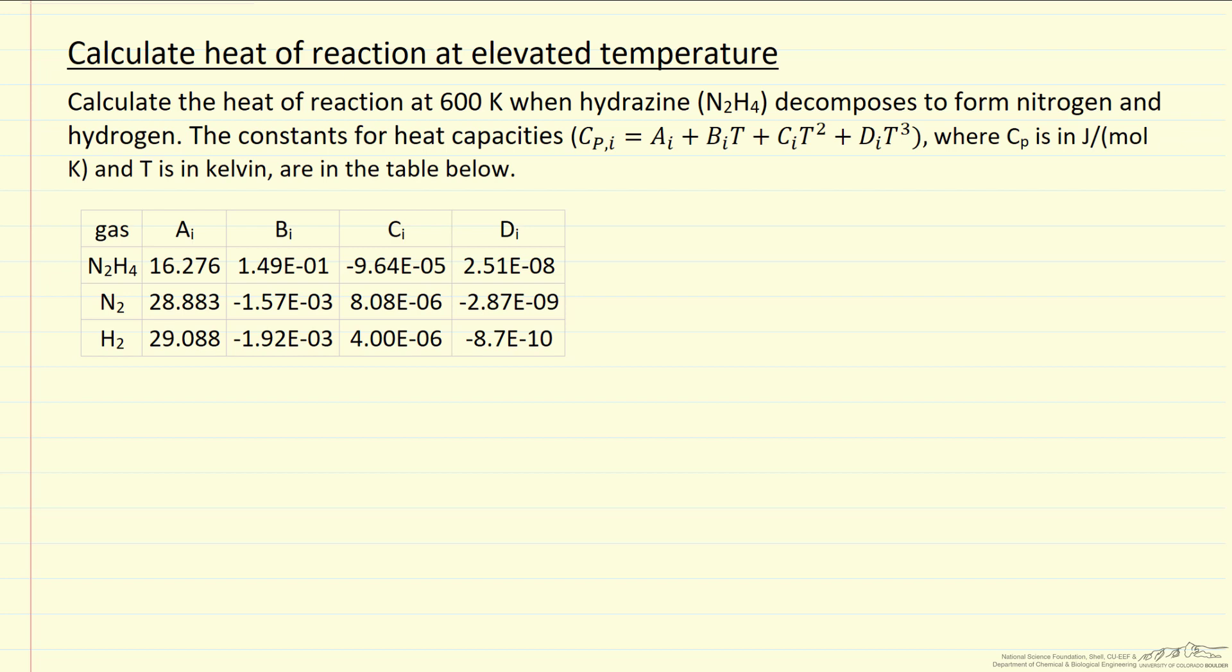Here we're going to use heat capacities that are a function of temperature and heats of formation at 298 Kelvin to calculate the heat of reaction at 600 Kelvin. So the constants for the heat capacities are given here.